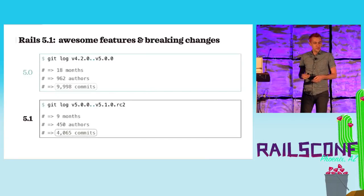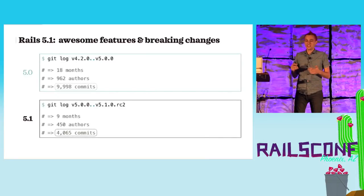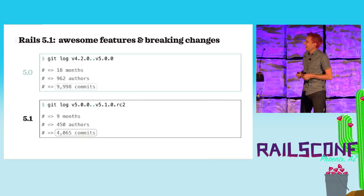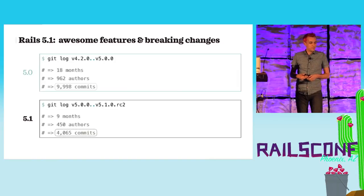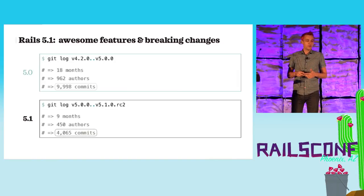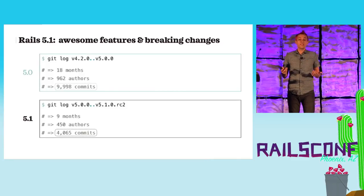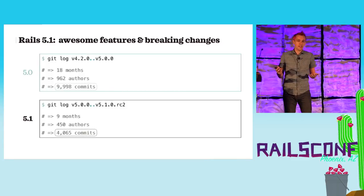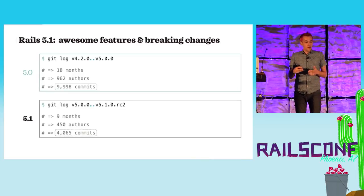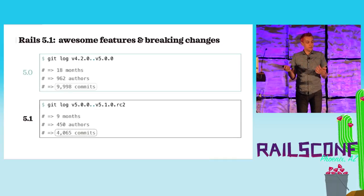To give you a little bit of context, 5.1 is going to be released any day now. When 5.0 was released, that was the result of 18 months of work and about 10,000 commits and about 1,000 committers. 5.1 you can think of as kind of half of it — nine months of work, about 4,000 commits.